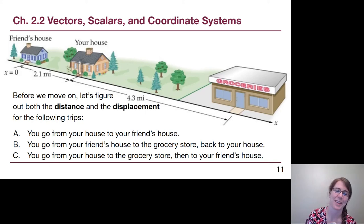In A, we go from our house to our friend's house. Our distance is 2.1 miles. Our displacement is negative 2.1 miles. Our final of zero minus our initial of 2.1 ends up with a negative number. We need that to describe the direction.